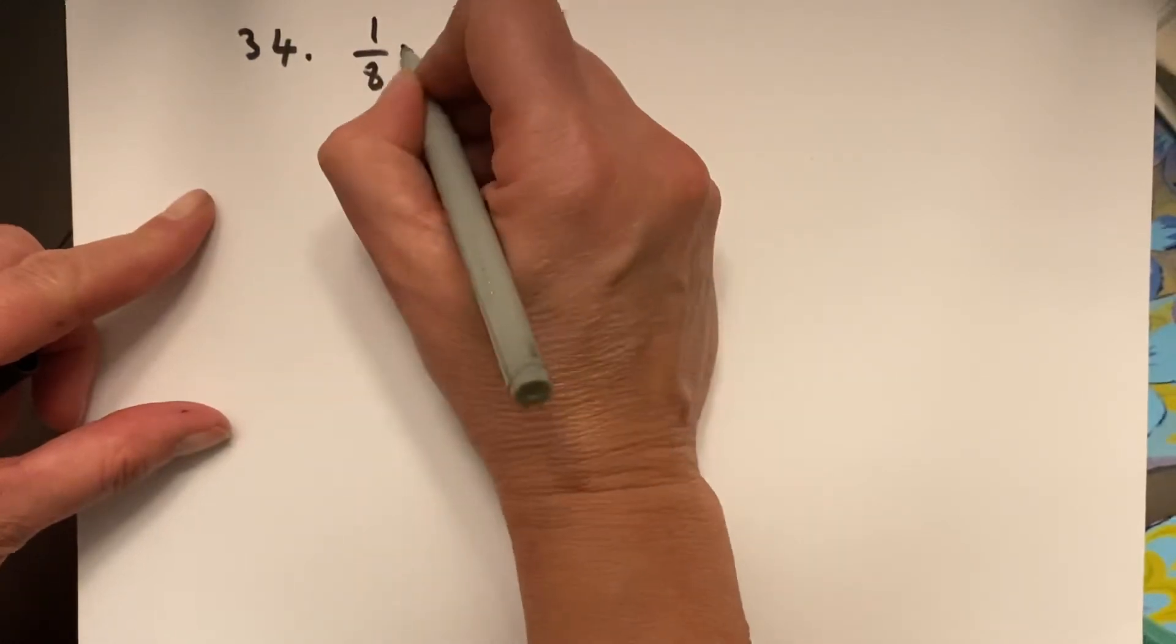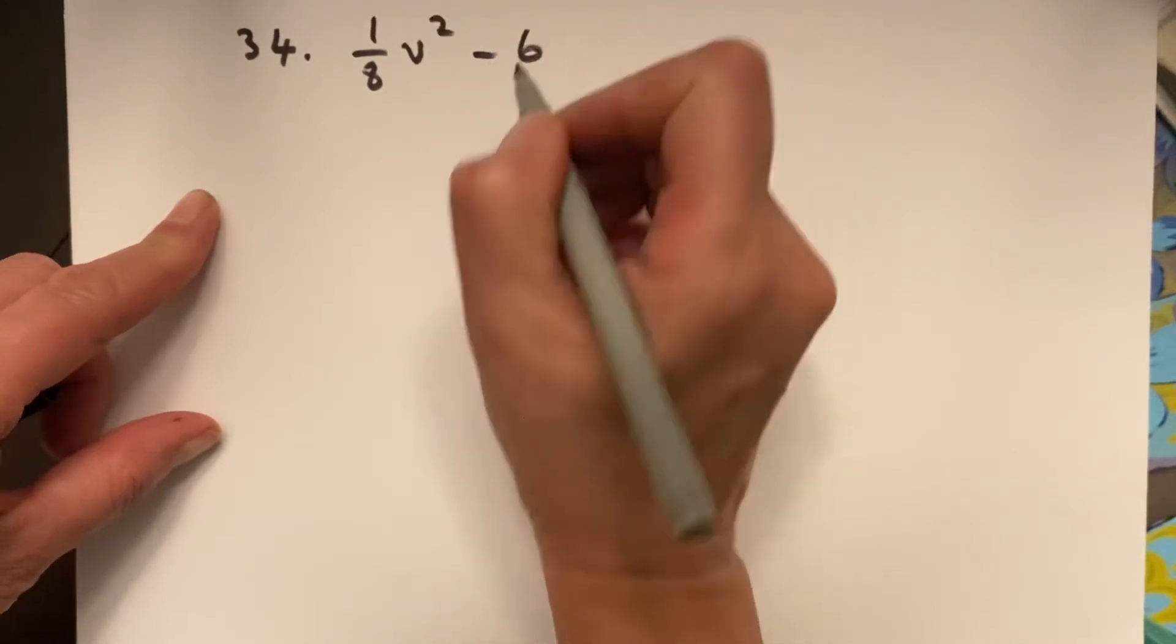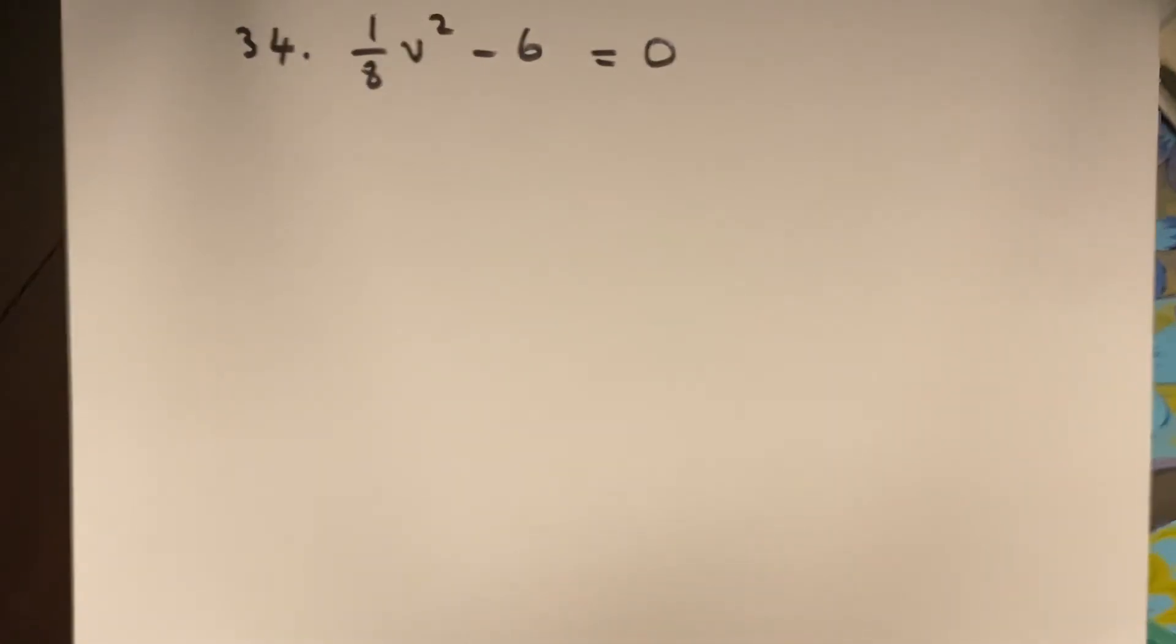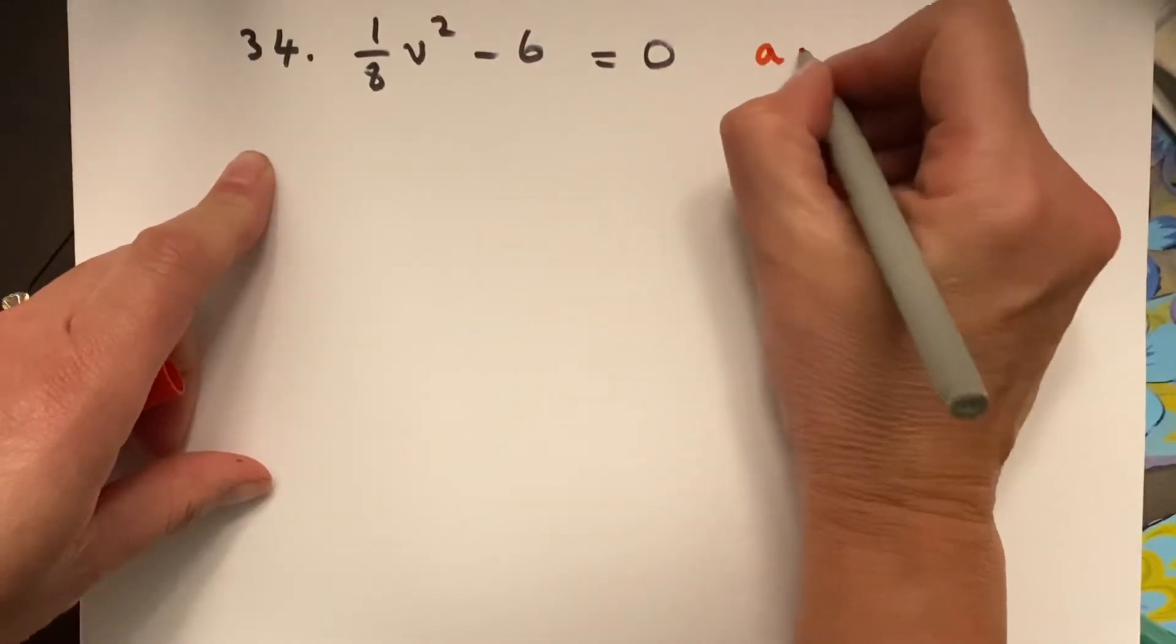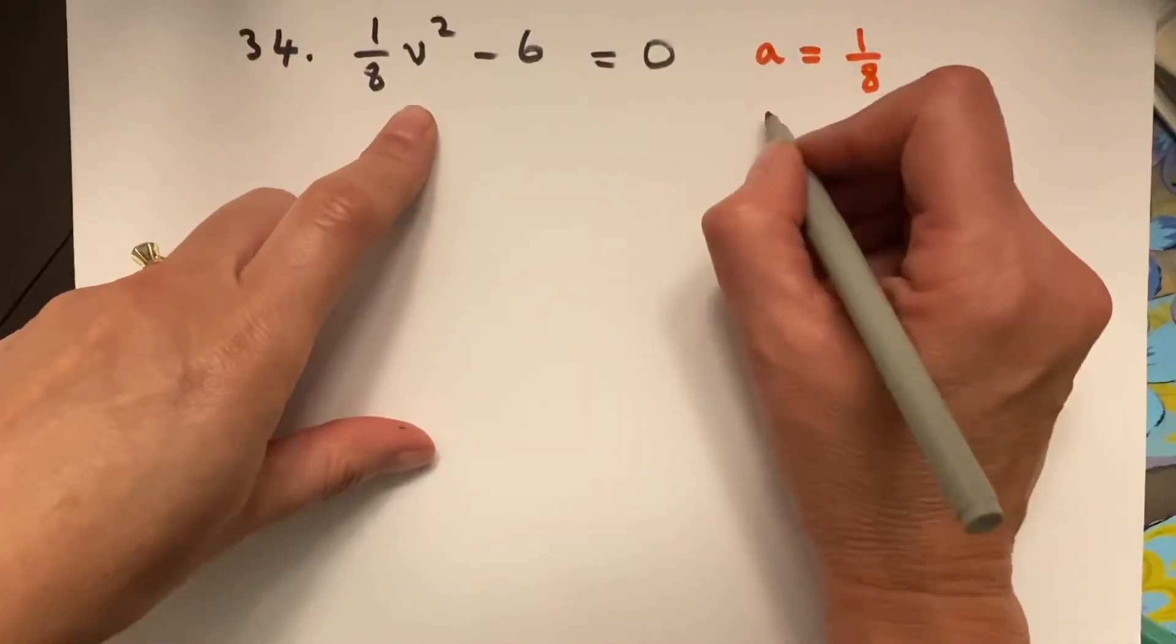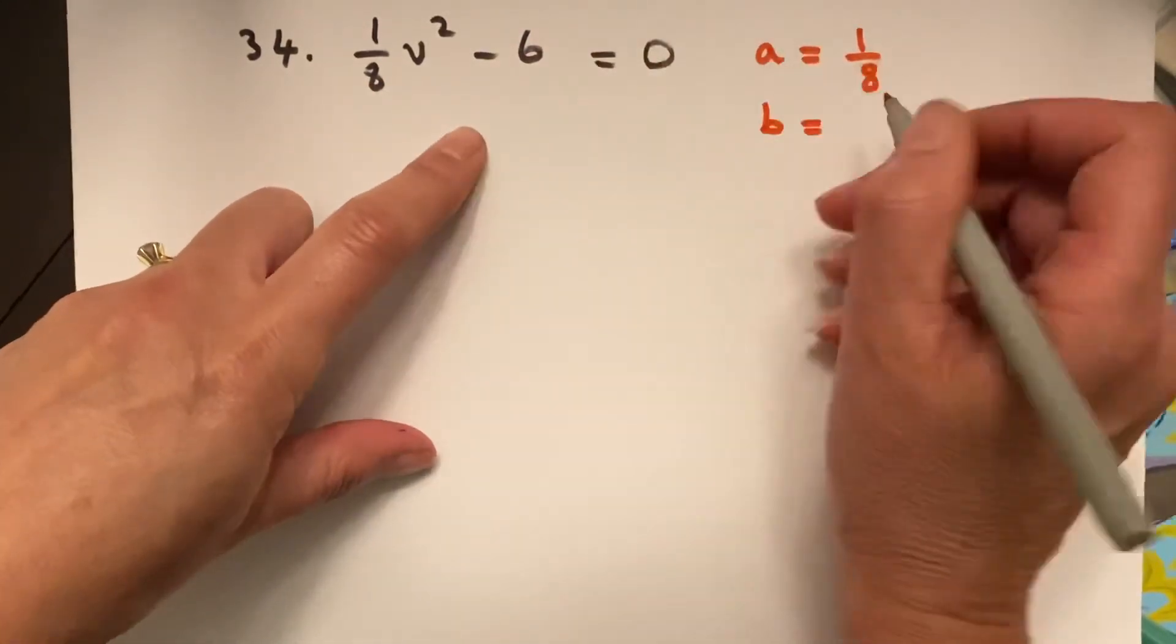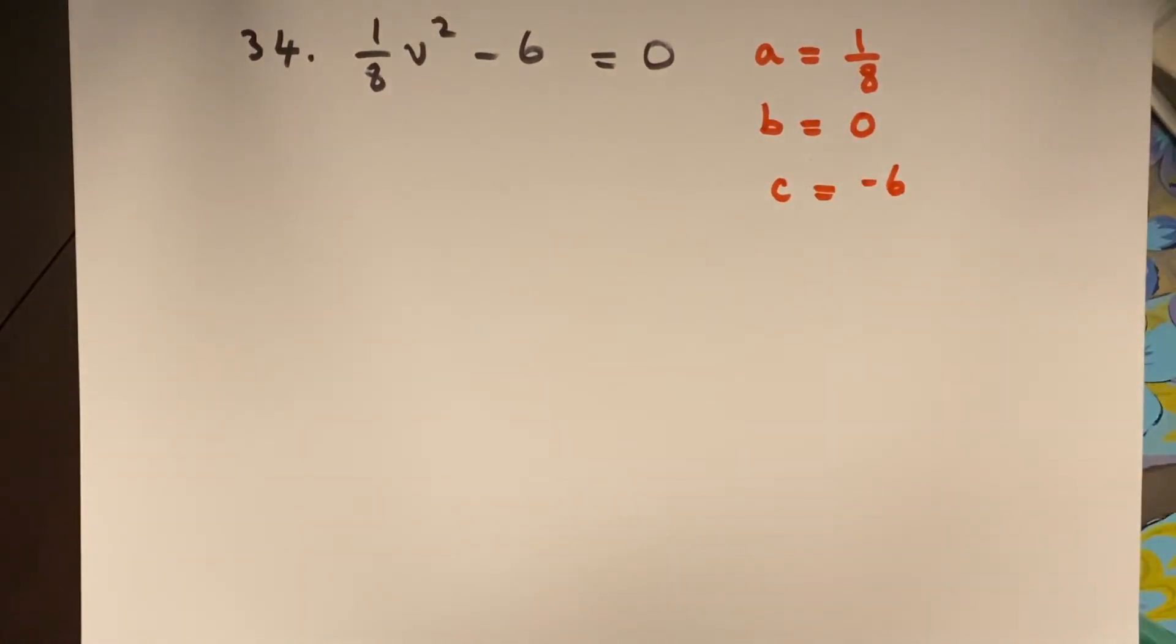1/8 v squared minus 6 equals 0. Well, if I look there, what's my a value? Well, my a value equals 1/8. My b value, since there's no v, right? There's a v squared, but there's no v. It must be 0. And my c value is negative 6.